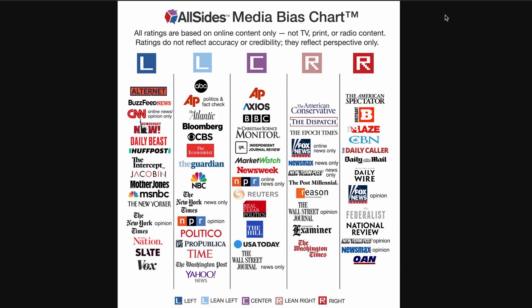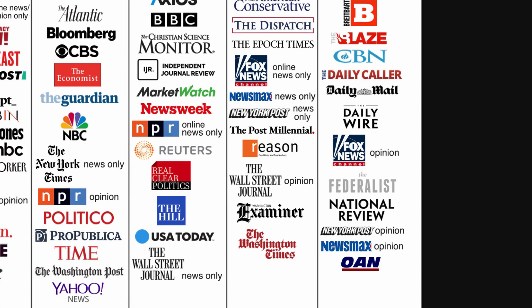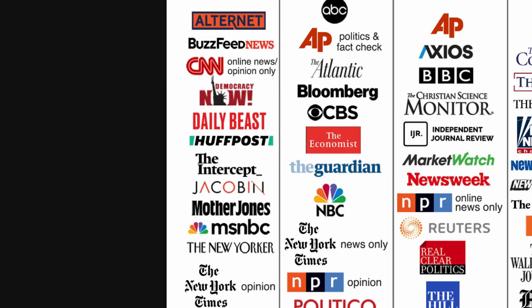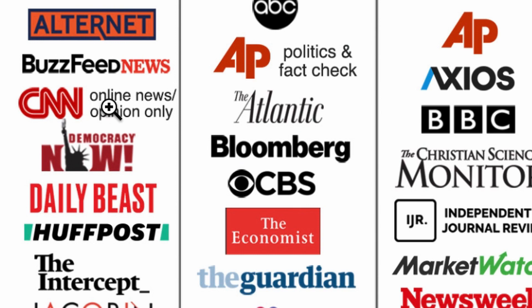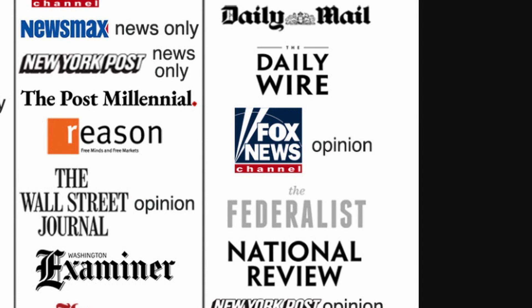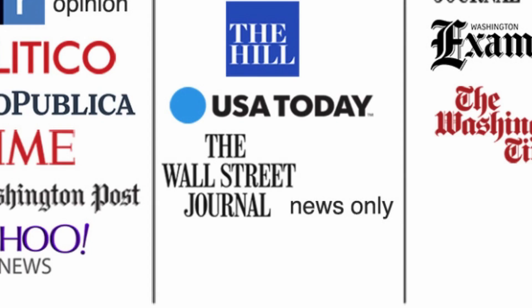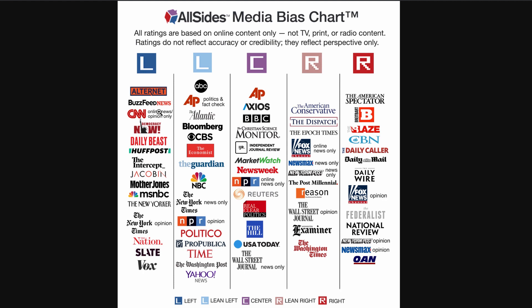First, you have the AllSides chart — started in 2012, tracking 800 sources. You'll notice the two L's, the C, and the R's. Based on their research, the R's stand for news outlets that lean heavily right, the L's are news outlets that lean heavily left, and the center are strictly news organizations that typically just dish out the facts only. For example, CNN's placement leaning heavily left is for online news and opinion only, not their news division. Same for Fox News on the right — opinion only, not their news division. And the Wall Street Journal is center for news only, though you have to be wary of their opinion sections as well. This is a very good basic guide if you want to look at something quickly.